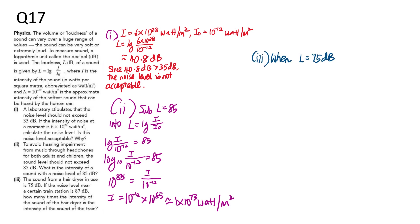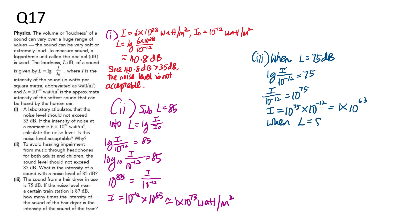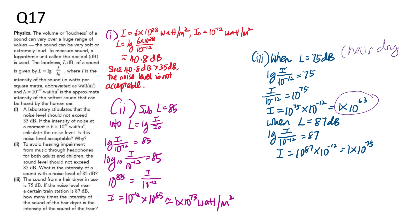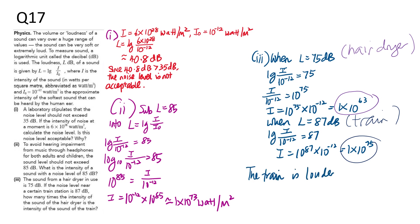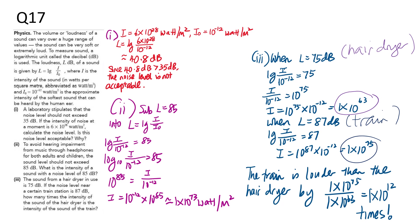For part three, we compare a hair dryer and a train. Substitute L equals 75 dB for the hair dryer to calculate its intensity. Do the same for the train at its decibel level. The train is louder than the hair dryer by 10 to the power of 12 times. So if you want to buy a house, make sure you don't buy near a train station because you may suffer hearing damage. And that concludes all the questions!